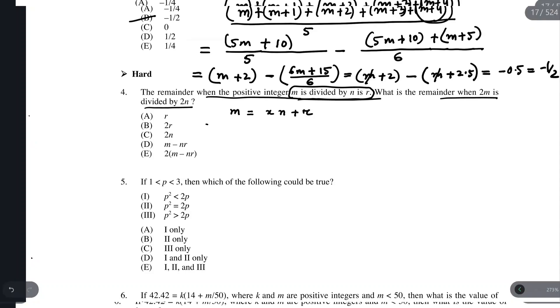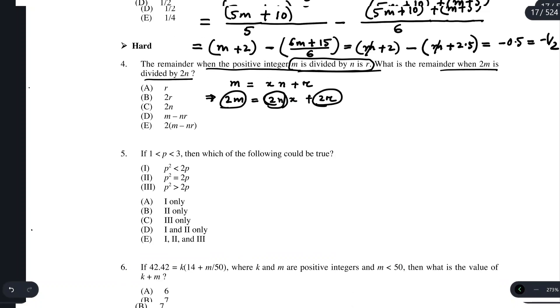Now, if I multiply this equation by 2, we can have 2m equals 2n multiplied by x plus 2r. So now, from here, we know that when we divide 2m with 2n, we can have a remainder of 2r. So the answer for problem number 4 should be d.